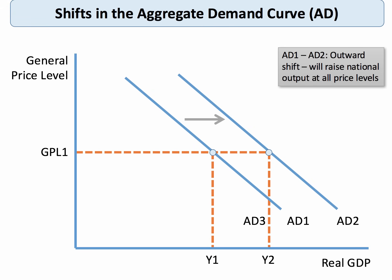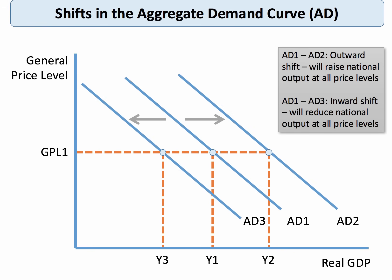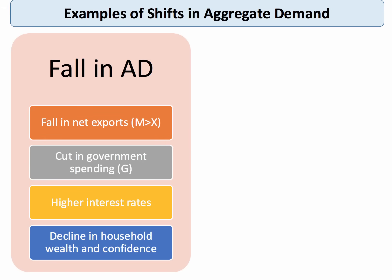In macroeconomics it's key to understand what causes shifts in aggregate demand. AD1 shifting to AD2 is an outward shift, whereas AD1 shifting to AD3 is an inward shift. What causes a fall or inward shift in AD? There are several reasons: a reduction in net exports — X has fallen or M has gone up; the government cutting its own spending in a period of fiscal austerity, so G is falling; the central bank lifting interest rates, having a dampening effect on consumer confidence and spending; or a fall in household wealth prompting people to spend less. Remember, consumption is the biggest single item of aggregate demand.